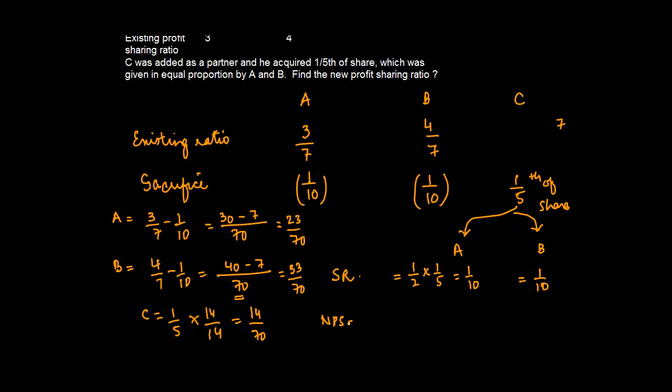Therefore, the new profit sharing ratio for A:B:C equals 23:33:14. And that's your answer.